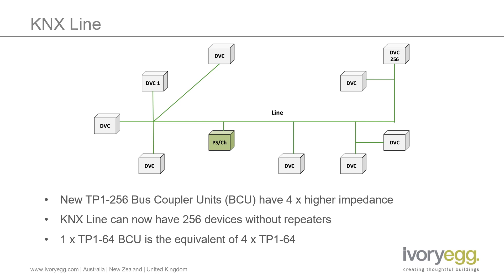To put it another way, there can be four times as many devices on a line while still maintaining the integrity of the telegram. The different types of bus coupler — the old ones and the new ones — are completely interchangeable, and using the newer version in the existing topology presents no issues at all. However, the sheer majority of KNX devices in the market are now using the newer version, so we can start promoting a line as having 256 devices without any line repeaters. This massively simplifies the installation and realises the true potential of the KNX topology.